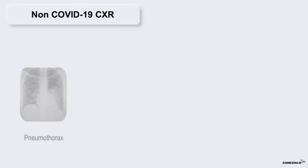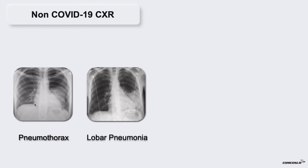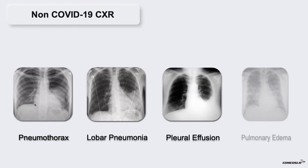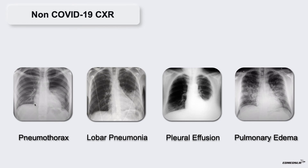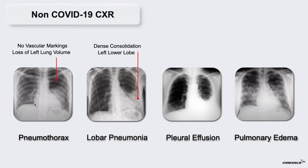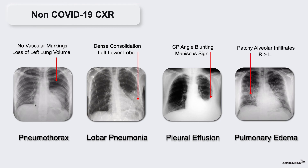Non-COVID-19 CXR suggests that the patient has an alternative diagnosis such as pneumothorax, lobar pneumonia, pleural effusion, pulmonary edema, etc. In the X-ray of pneumothorax, we can see no vascular markings and loss of left lung volume. We can also see dense consolidation in the left lower lobe. In the X-ray of pleural effusion, we can see blunting of the left costophrenic angle and meniscus sign. In the X-ray of pulmonary edema, we can see patchy alveolar infiltrates which are more prominent on the right side.